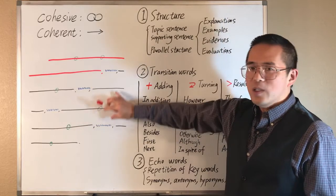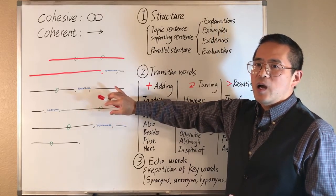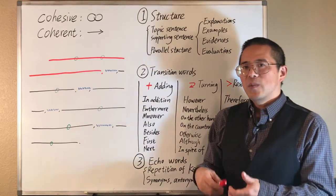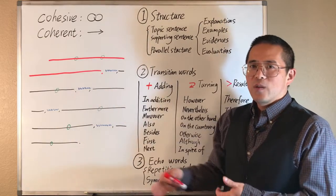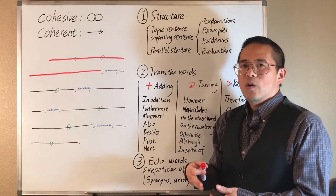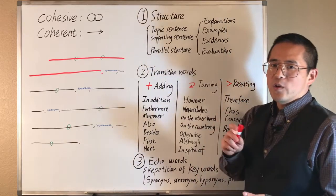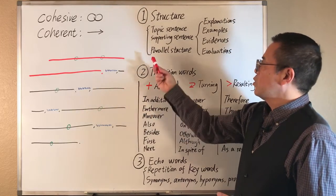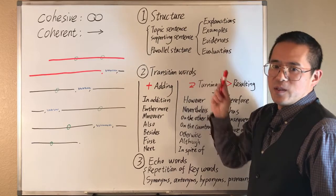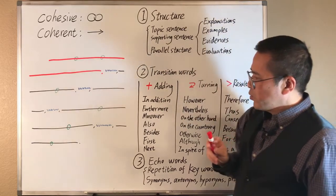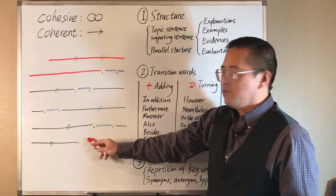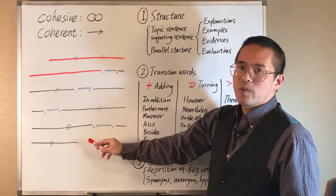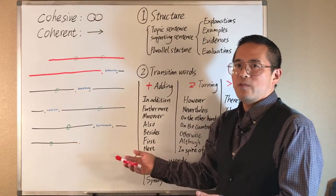A well-structured paragraph should contain the topic sentence and the supporting sentences in an orderly manner. The supporting sentences should be placed in an appropriate order so that they can flow smoothly. The order may depend on their importance, time sequence, or the logical flow. Also, in the supporting sentences, when comparing or listing different ideas, we should use a parallel structure. Sometimes, we may want to add a concluding sentence at the end of the paragraph. Both the topic sentence and the concluding sentence can help the reader to keep the main points of the paragraph in mind.